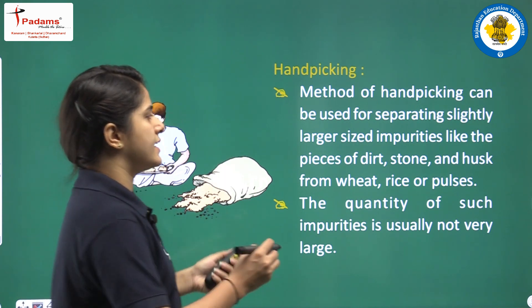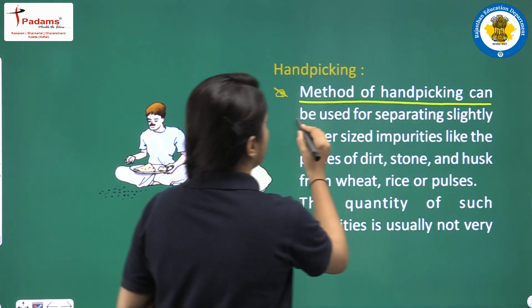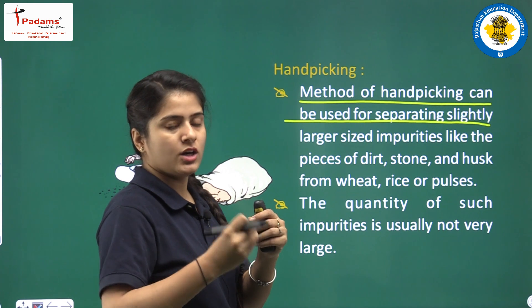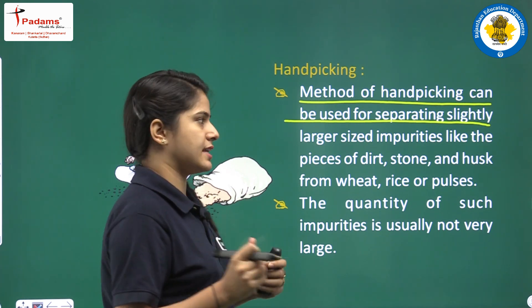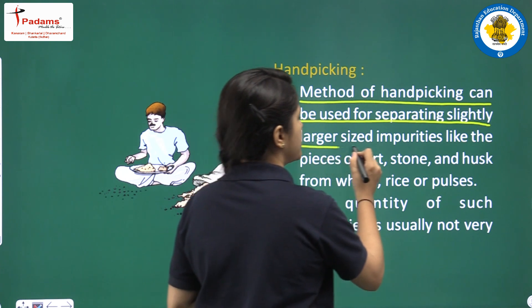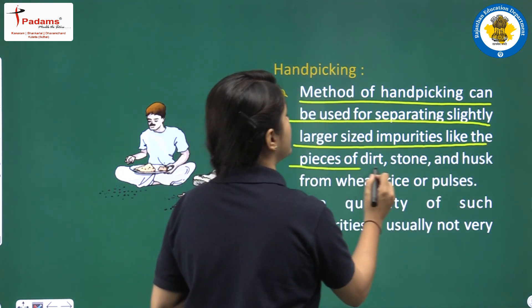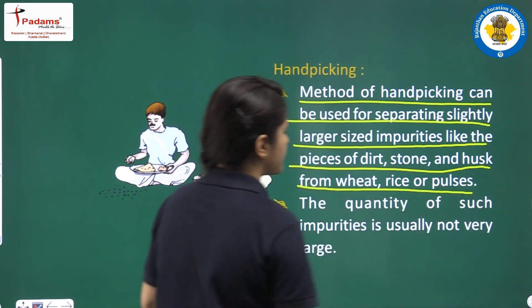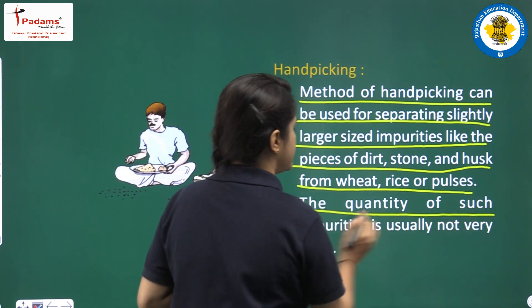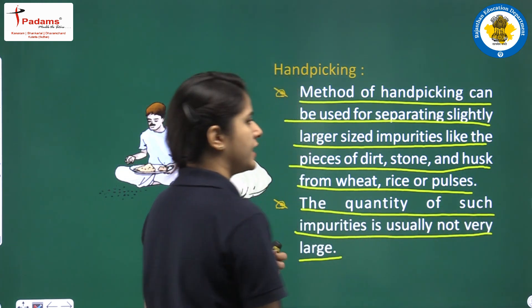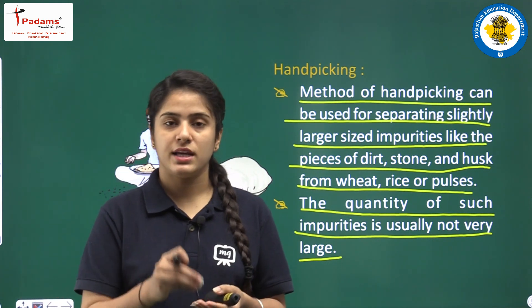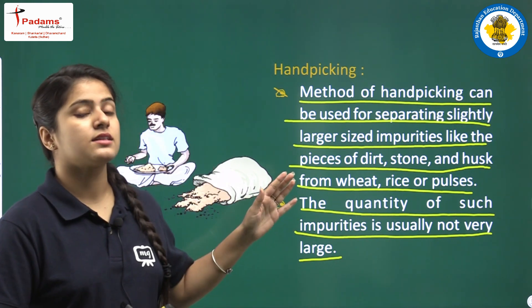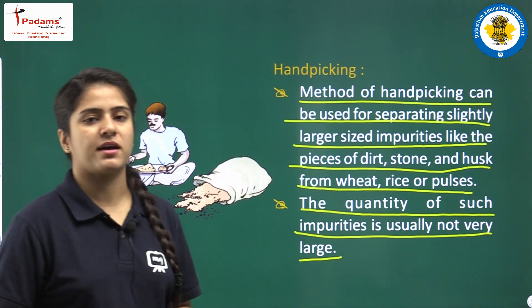Hand picking can be used for separating slightly larger sized impurities — like pieces of dust, stone, and husk from wheat, rice, and pulses. The quantity of such impurities is usually not very large. So when we are separating husk or dust particles from rice or wheat, we are using the hand picking method.